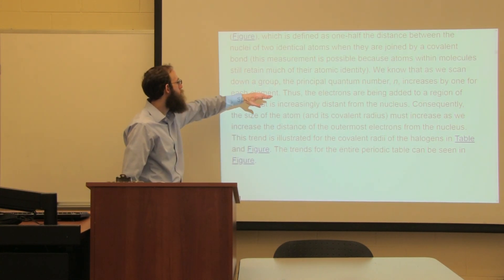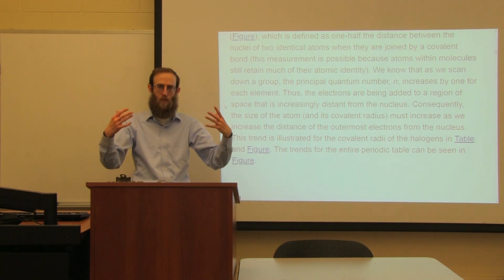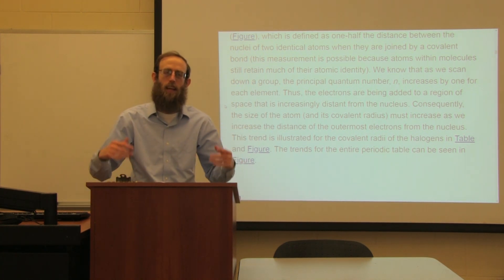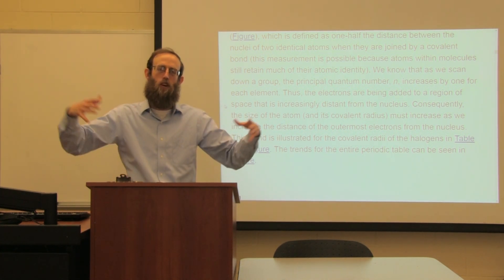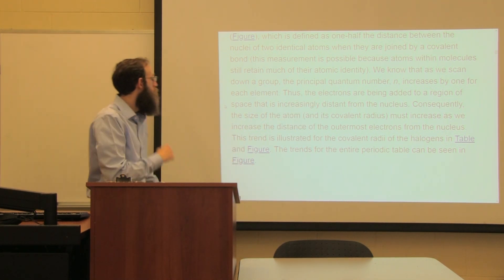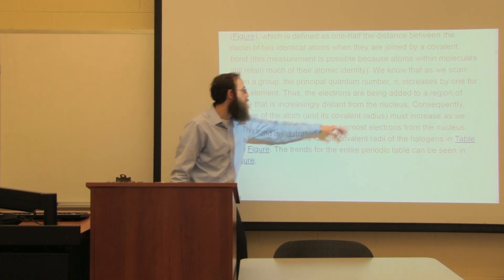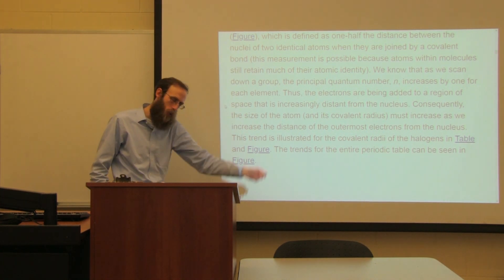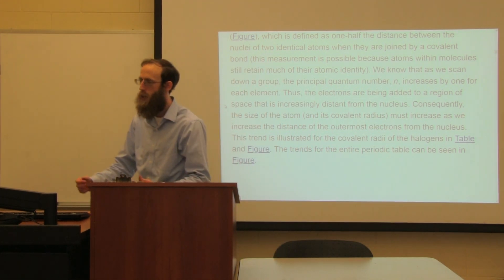As we scan down a group, the principal quantum number increases, and that principal quantum number relates to the size and location of the energy level. As we go down the periodic table, the principal number increases and the electrons are spending more time in the outer reaches of that element. The electrons are being added to a space that is increasingly distant from the nucleus. Therefore, as we go down a column, the size of the atom and therefore its covalent radius is going to increase.